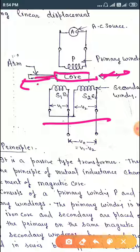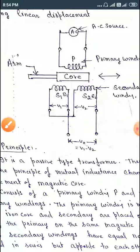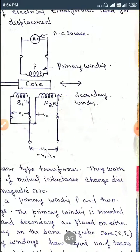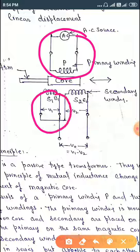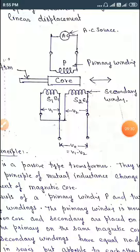That is the core arm. Looking again at the diagram, you can see the primary winding P, secondary windings S1 and S2, and these are both connected in series. That is the working of LVDT — Linear Variable Differential Transformer.